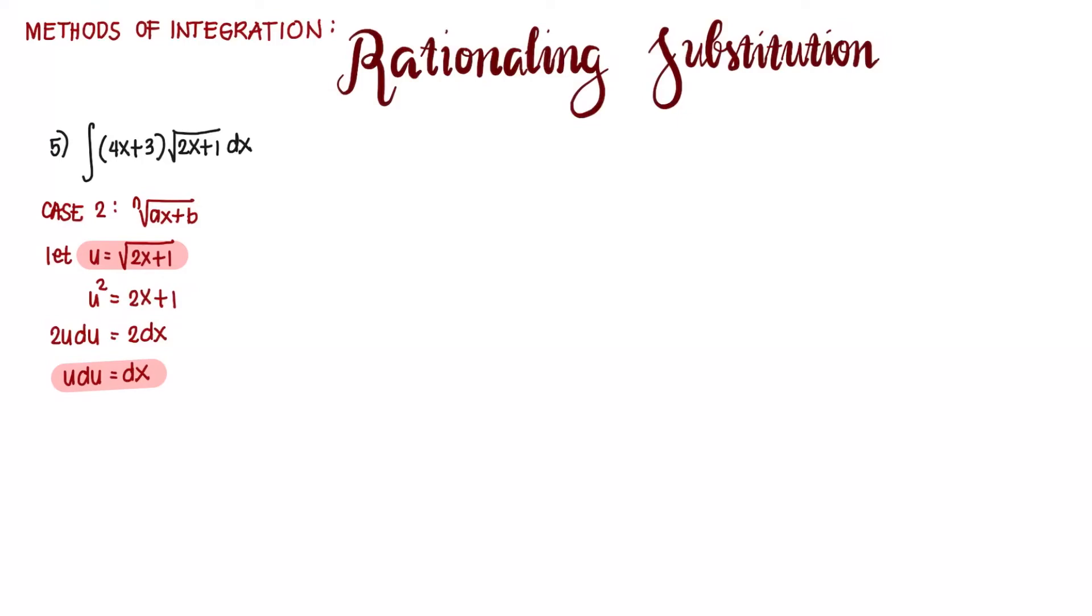If we transpose 1 to the left side, that's u² - 1 = 2x. If we multiply both sides by 2, that's 2u² - 2 = 4x. So we can use this to substitute.